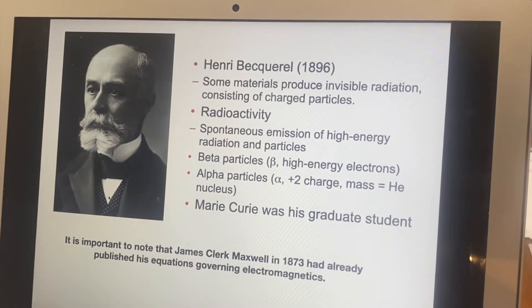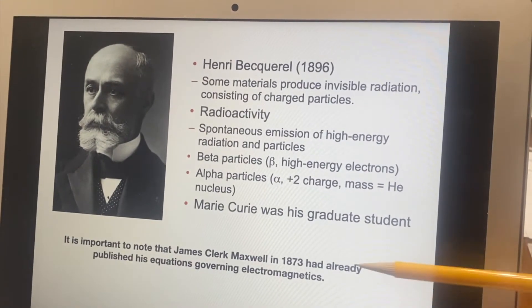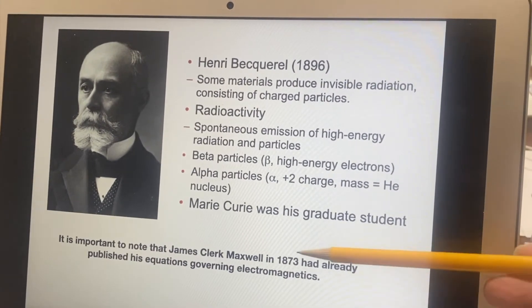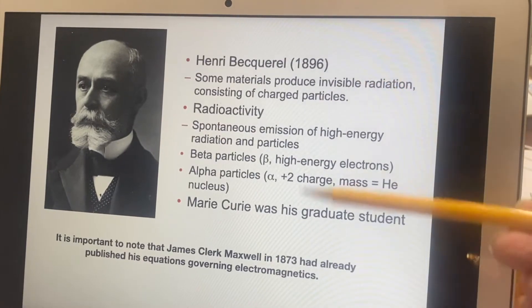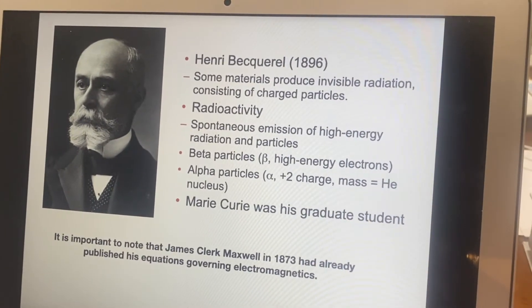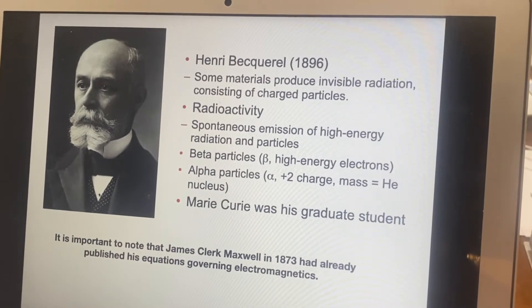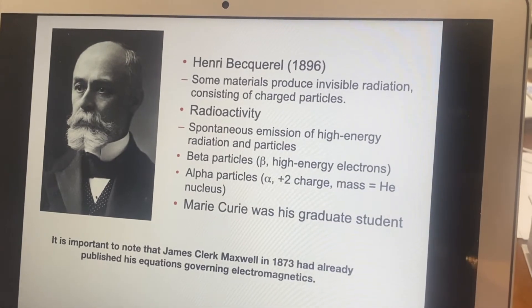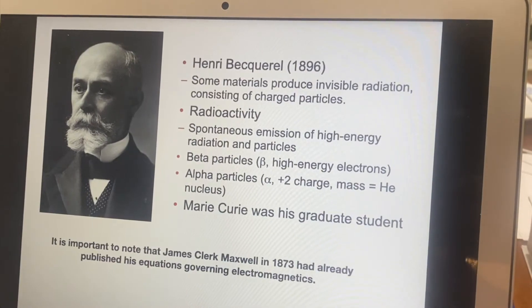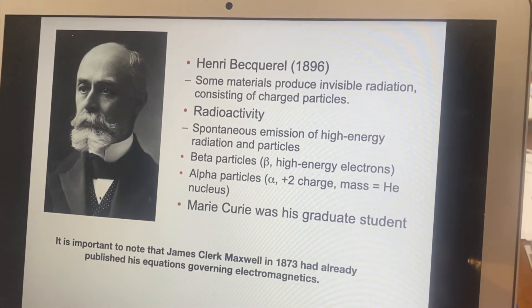Now, what is another interesting side note is that James Clerk Maxwell had already, more than 20 years earlier, published equations governing electromagnetics. So, the idea of charges moving and creating a magnetic field and that sort of thing was already known, and yet, it hadn't been figured out that things could also move through the air instead of just through wires.